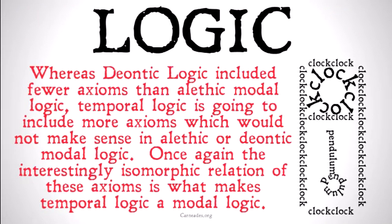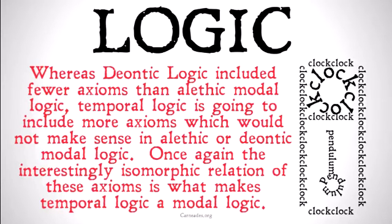Whereas deontic logic included fewer axioms than alethic modal logic, temporal logic is actually going to include more axioms than either of them. We're going to need more axioms to create a logical structure that maps onto our understanding of time than we needed to create a logical structure that mapped onto our ideas of necessity and possibility, or our ideas of obligation and permissibility.